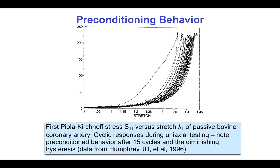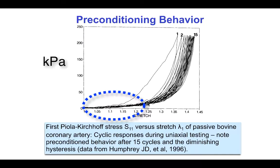Here we see non-linear stress-strain curves, hysteresis, and preconditioning behavior in a cow coronary artery subjected to uniaxial circumferential loading. The stresses here are in kilopascals. Note that, especially after the tissue has been preconditioned, the stiffness is very low until the strain reaches about 20 or 25%.